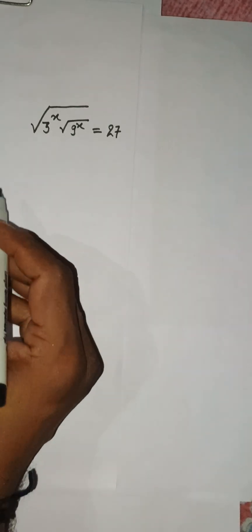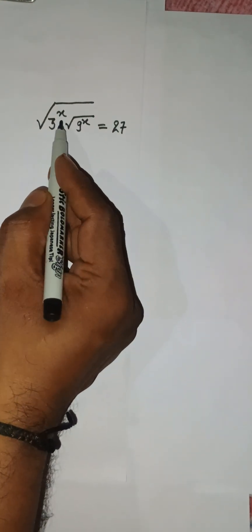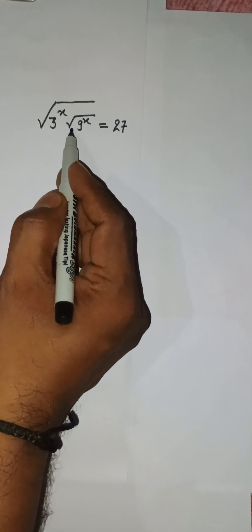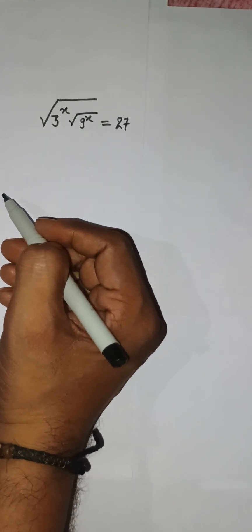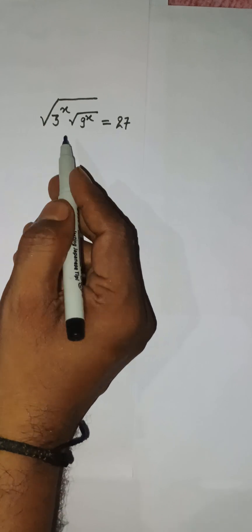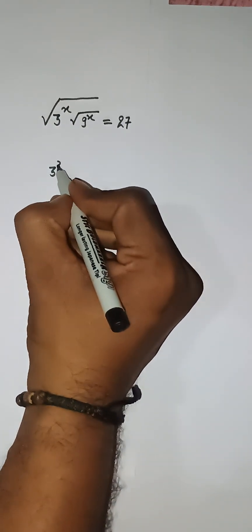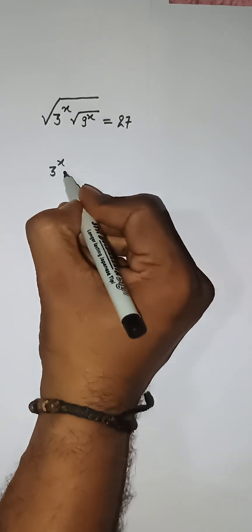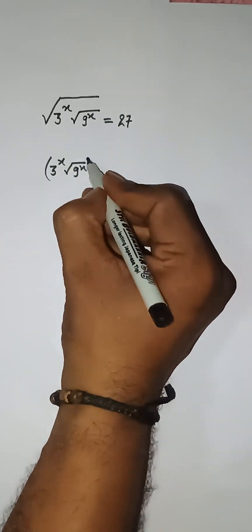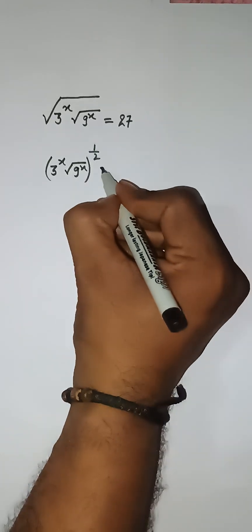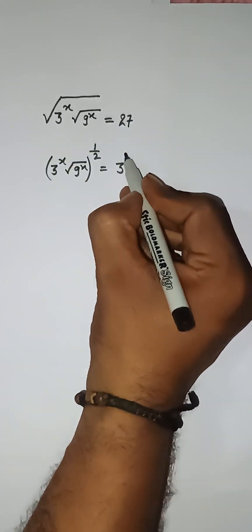Hello everyone, let's solve this amazing problem. We have root under 3 to the power x into root under 9 to the power x equal to 27. We need to get the value for x. This square root can be written as 3 to the power x times root under 9 to the power x, with this power 1 by 2, and 27 can be written as 3 to the power 3.